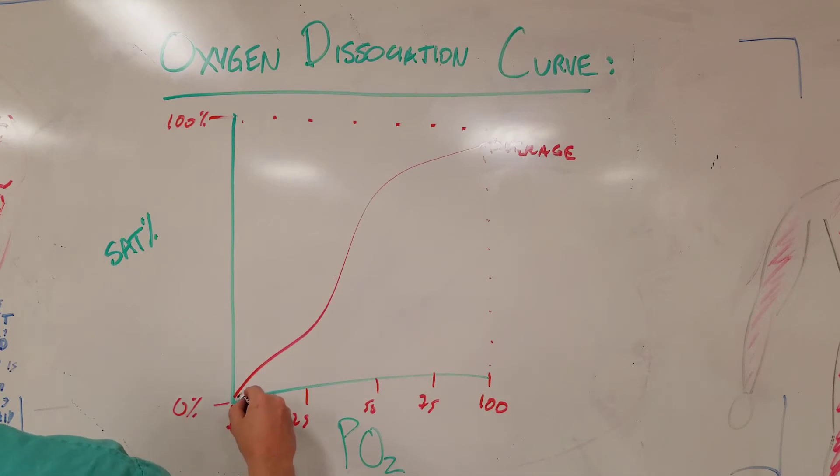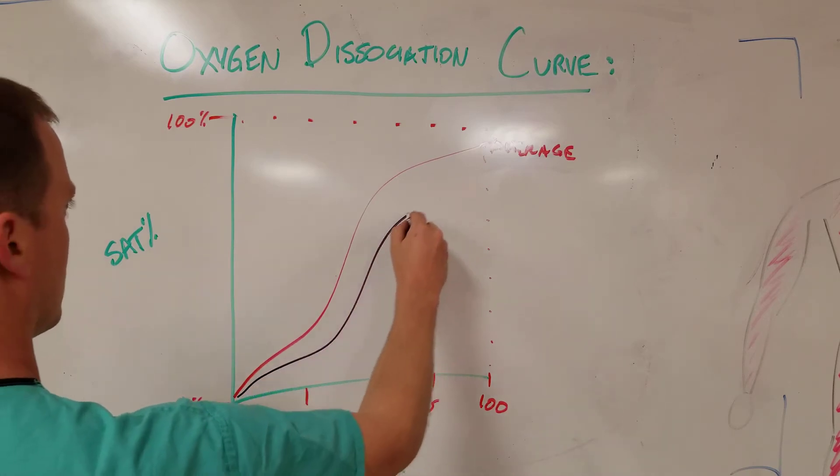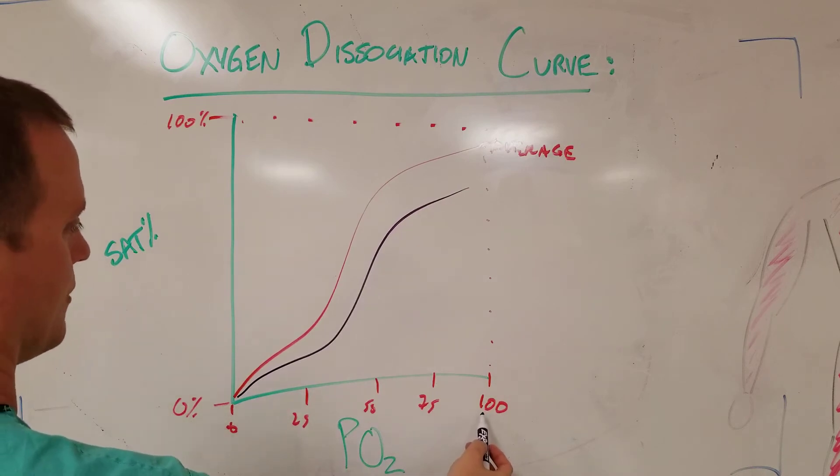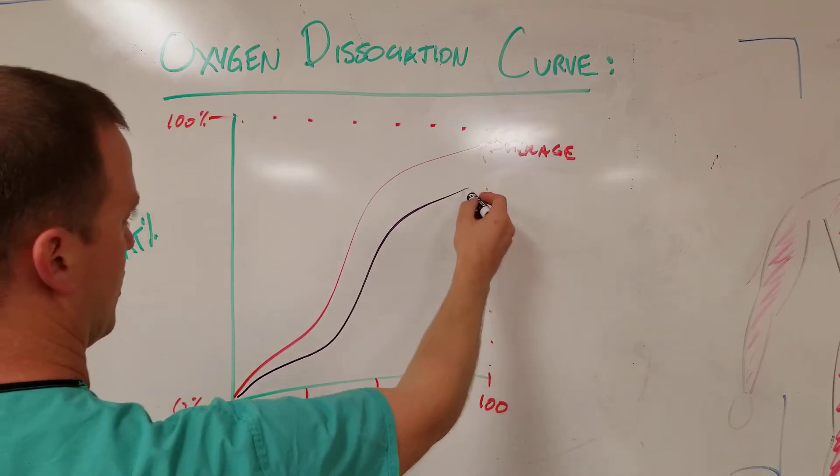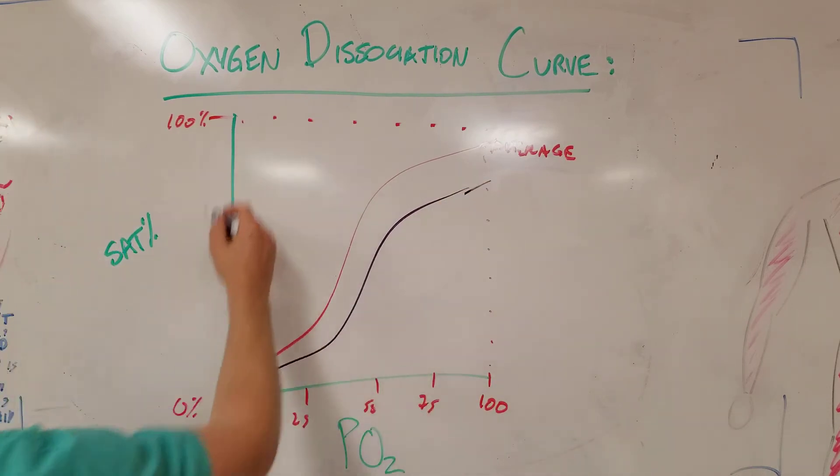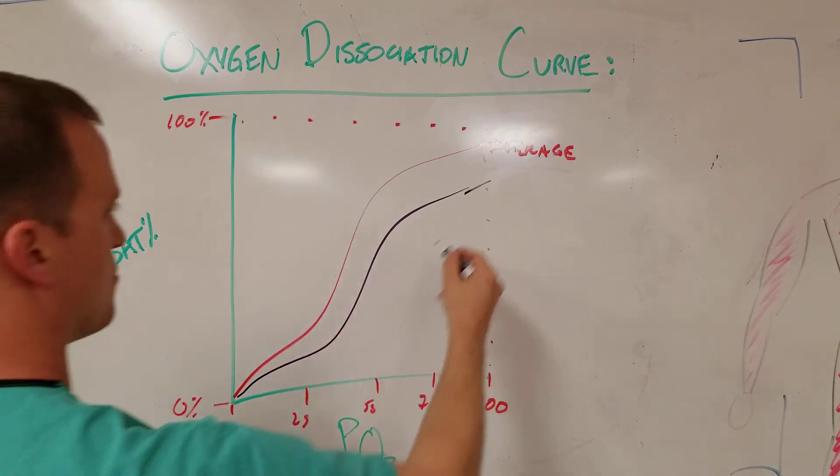It's called a right shift. And what this means is you can already tell that at a certain partial pressure of oxygen, let's say 100, less hemoglobin is going to be bound, which means there's more unloading.